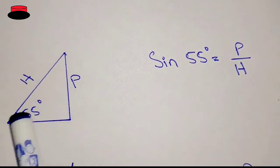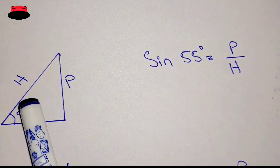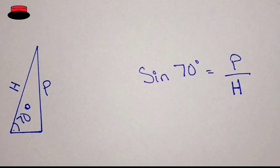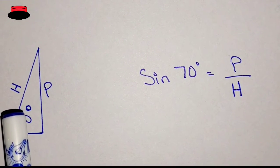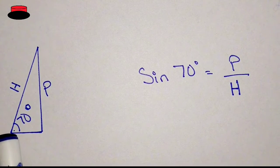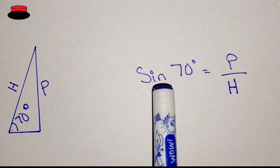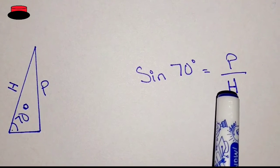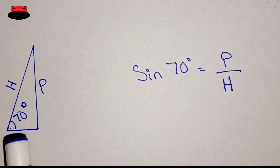So in that case we can say that sin 55, or sin theta, is equal to perpendicular upon hypotenuse. Here you can see that the hypotenuse is a little bit shorter than in the previous figure. If we keep reducing the size of the base, the hypotenuse length will decrease as well — and in this case sin 70 degree is equal to perpendicular upon hypotenuse.